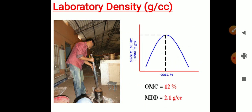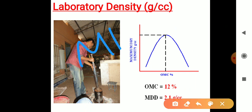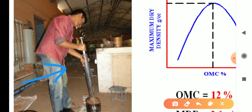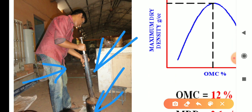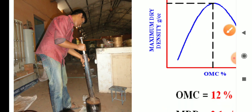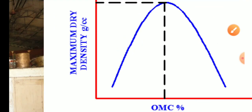This compaction test is called the Modified Proctor Test (MPT). We take a larger mold with a rammer. We take 7 kg of soil and vary the water content starting from around 7 percent, increasing by 2 percent each time. The rammer size is 4.56 kg, with 5 layers and 56 blows per layer, until MDD is achieved and the curve starts to decrease.